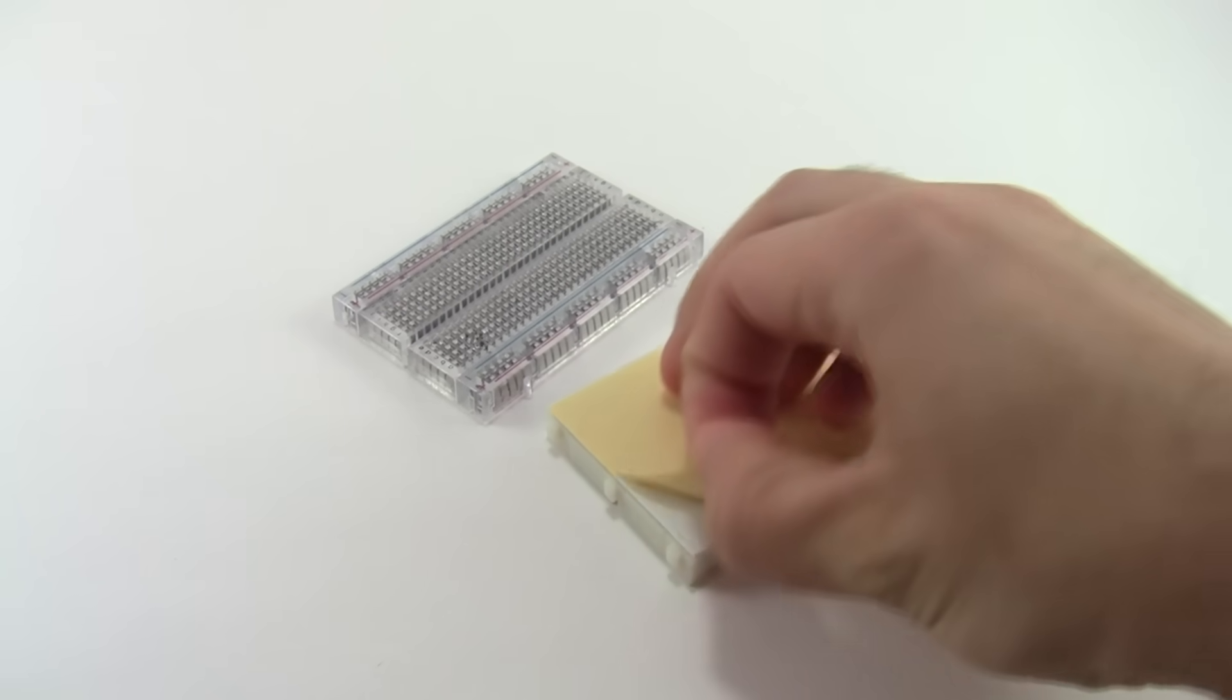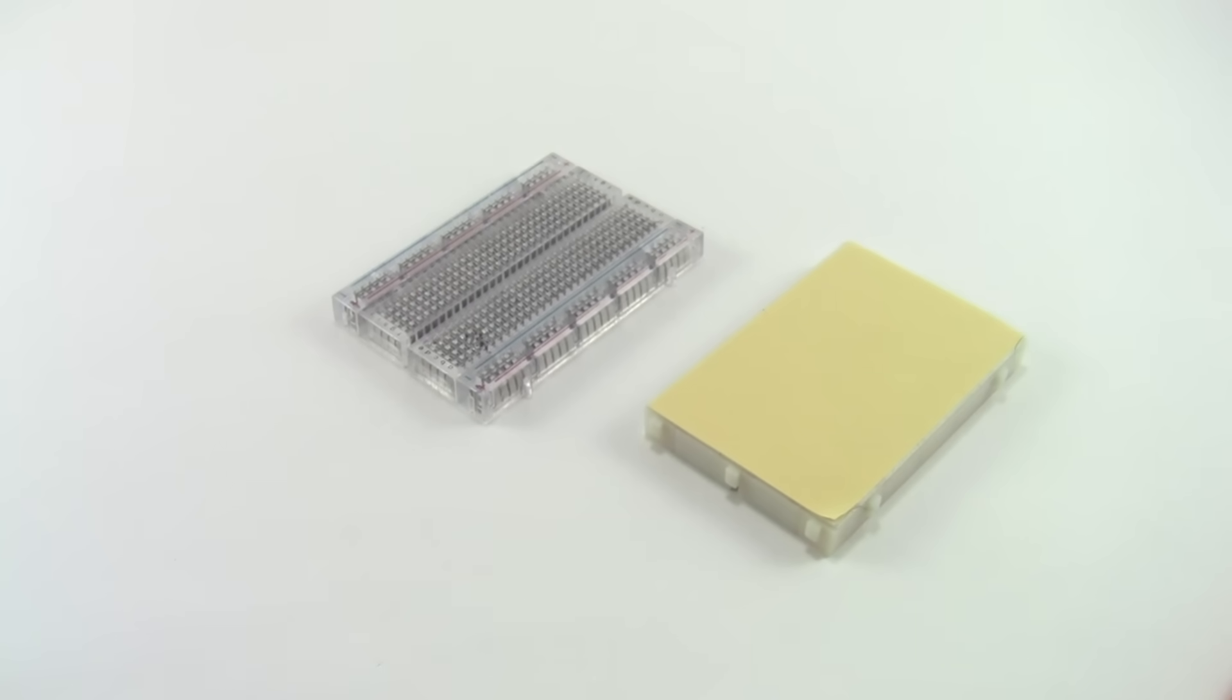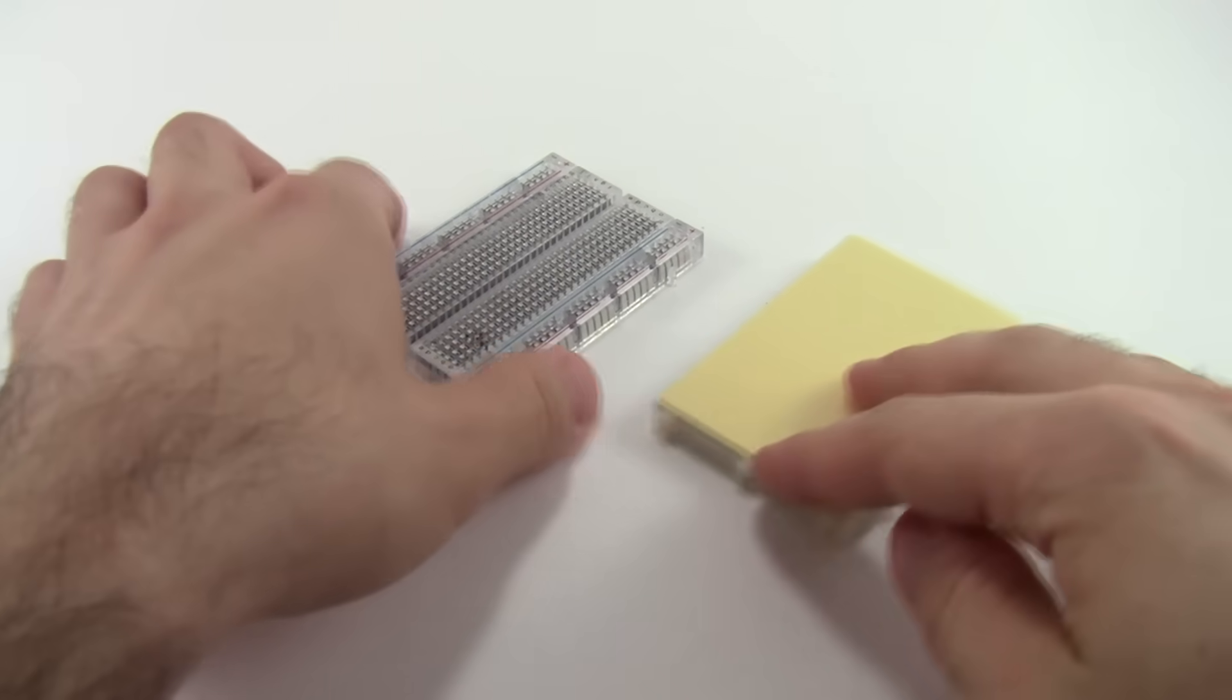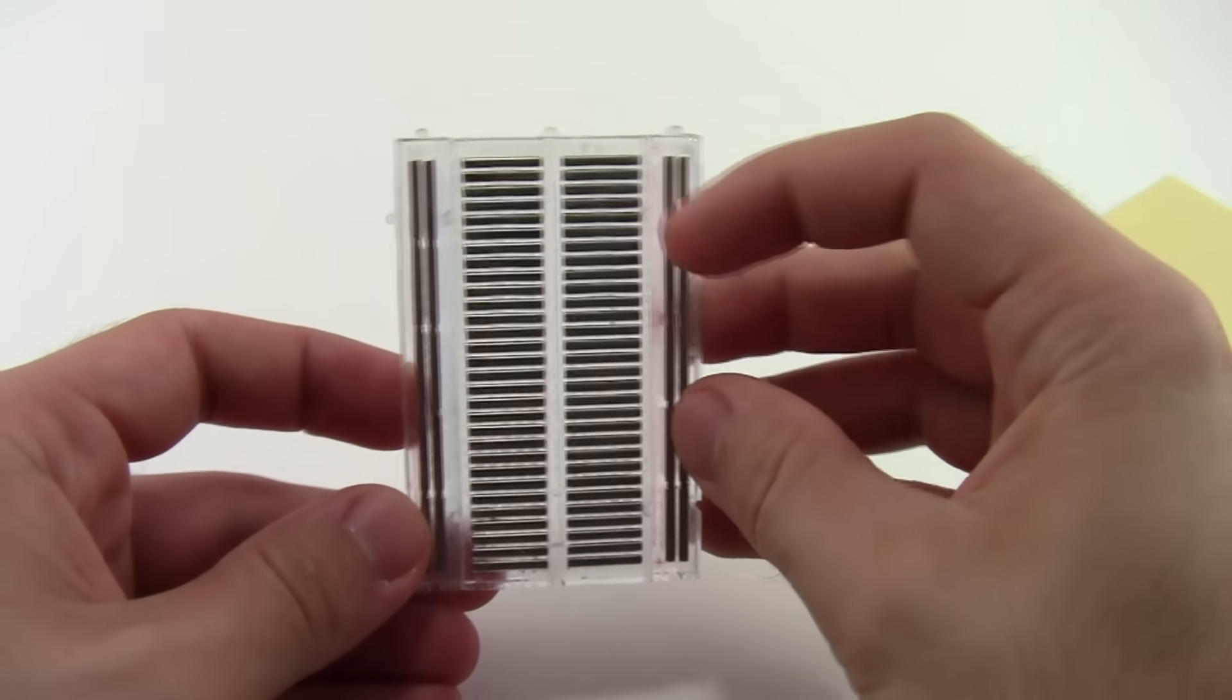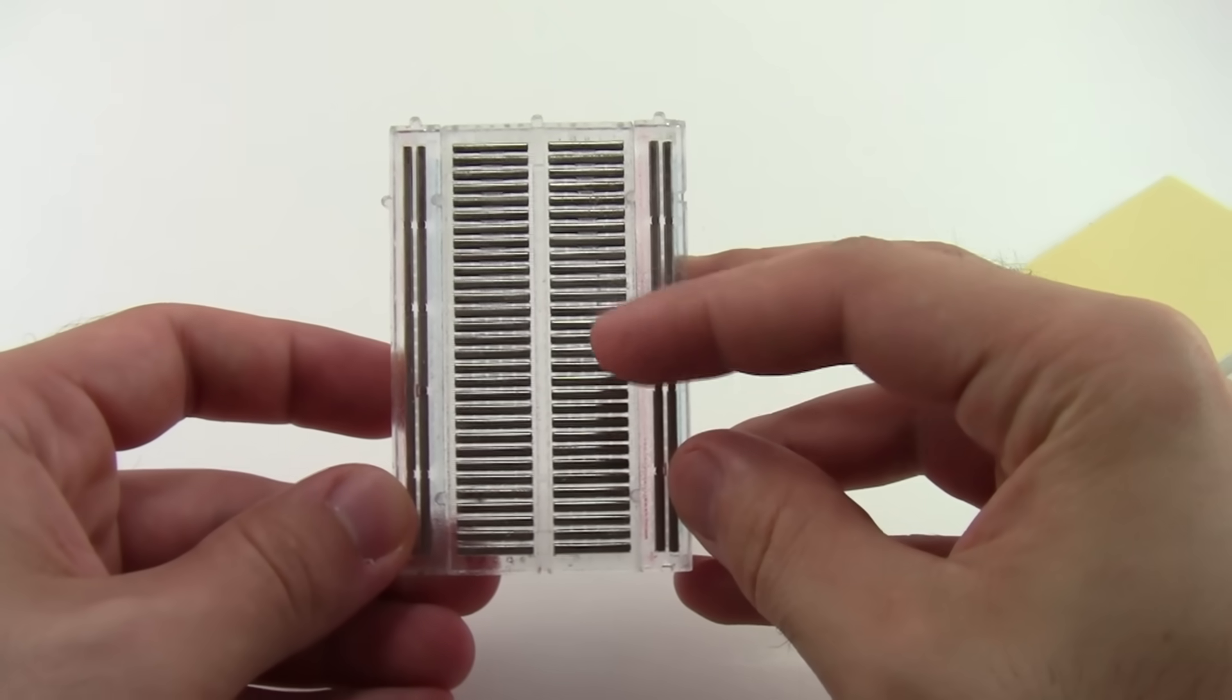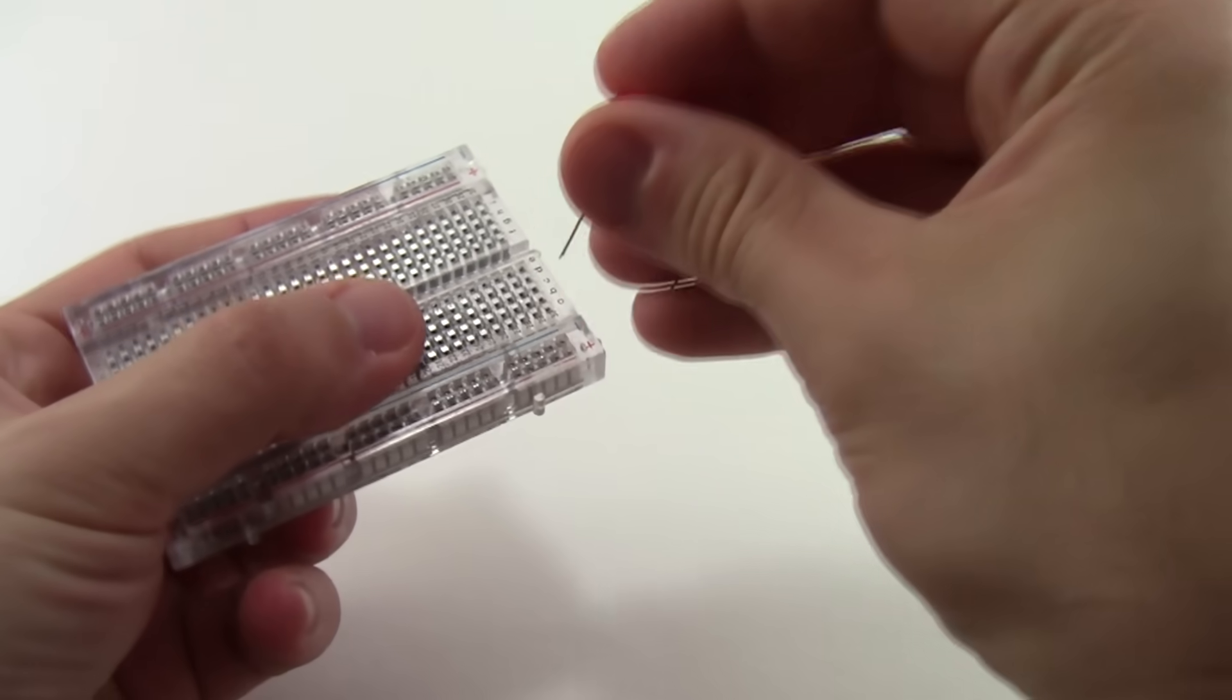If you flip a breadboard over, they come with an adhesive backing that allows you to permanently stick them onto a project, for example, the breadboard stuck to this robot. If you remove that backing completely, like I've done with this breadboard here, you expose a series of metal strips that are inside the breadboard. These metal strips are what make mechanical and electrical connections to the components you insert into the breadboard.